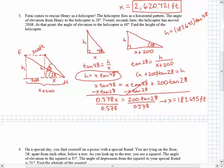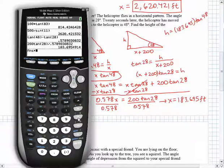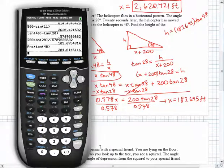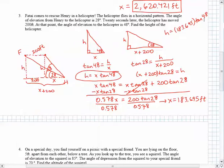h would be 183.695 times the tangent of 48. And then I can just have that in my calculator. We get 204.014. And that's my answer.